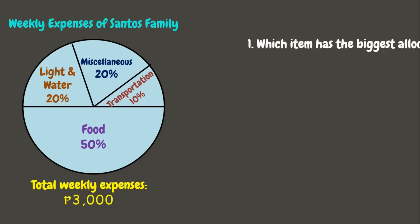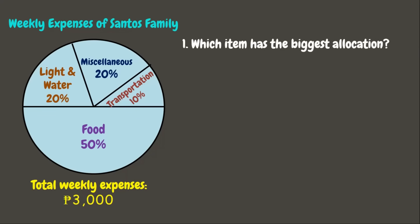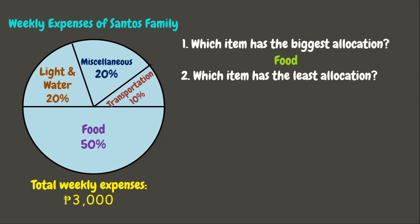Question 1: Which item has the biggest allocation? We can see that the biggest portion of the whole is food, which is 50 percent of the expenses. Question 2: Which item has the least allocation? It's obvious that transportation has the least allocation, at only 10 percent.